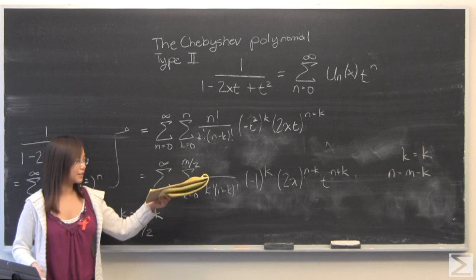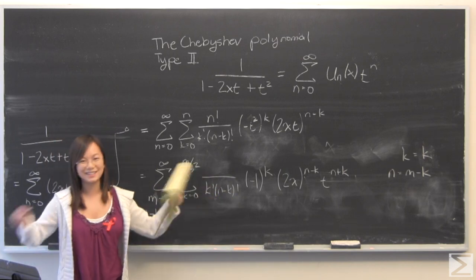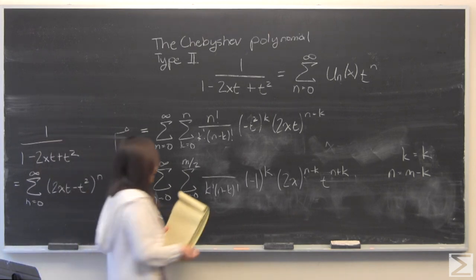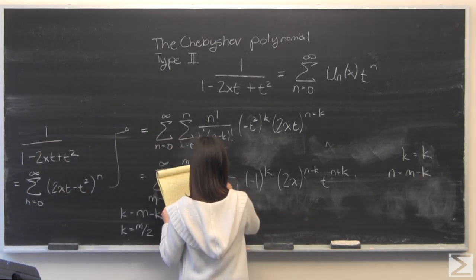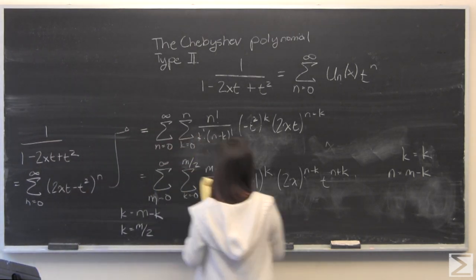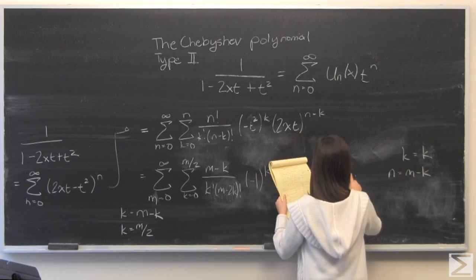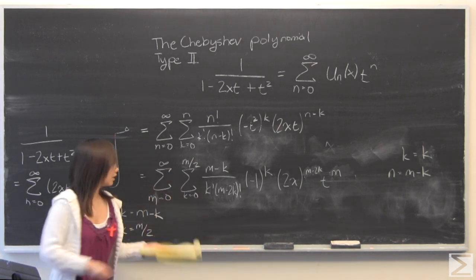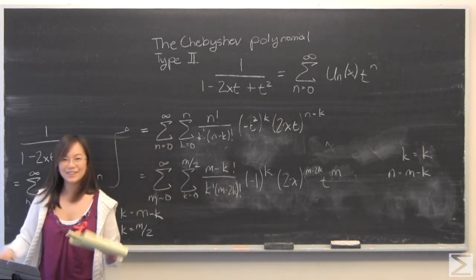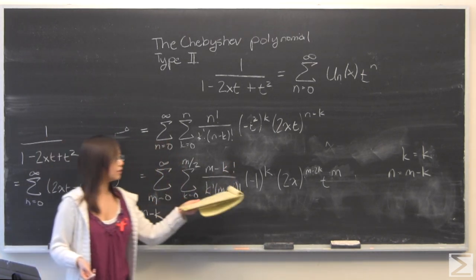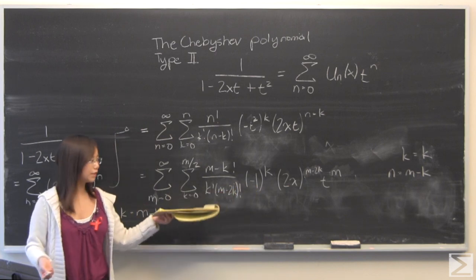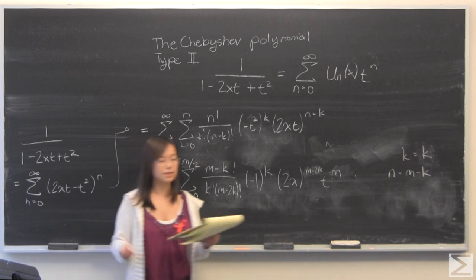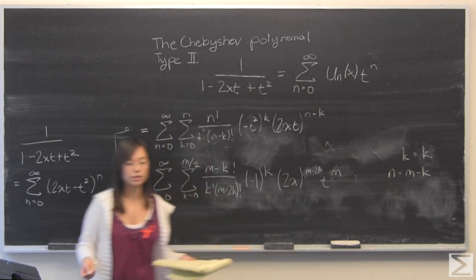Since k is still equal to k, I'm going to leave that alone, but where I see an m, I'm going to substitute an n minus k. What that does for us is gives us these terms that look a little messier, but what it really does that helps us a lot is it gives us this t to the power of m term. Why is that useful? Because now it finally matches this.